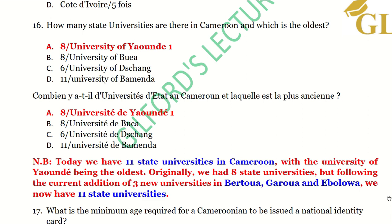There are no longer eight state universities in Cameroon. We now have 11 state universities following the recent decree signed by the president himself. The president signed a decree creating three new universities in Betwa, Garoua, and Ebolowa. So today we have 11 state universities. If you see this question again this year, you need to choose 11 state universities, with the University of Yaounde I being the oldest.